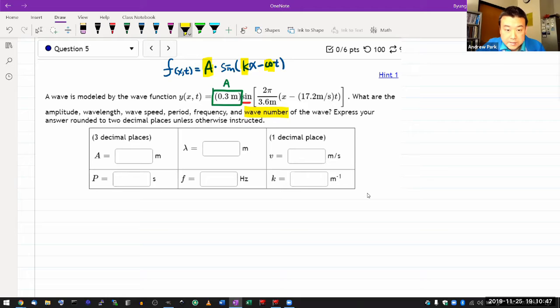So you can read off, okay, what's the coefficient of x? This is my coefficient to x, so that is k directly. Let me just mark it off as k. So we've taken care of amplitude, we've taken care of k.